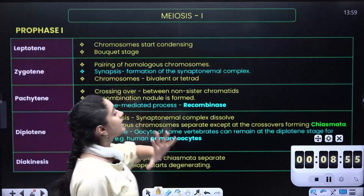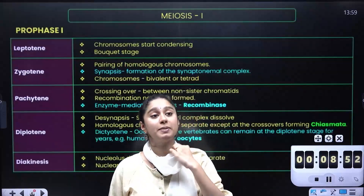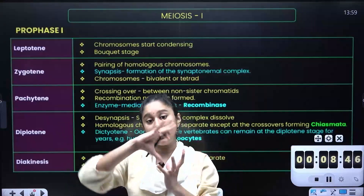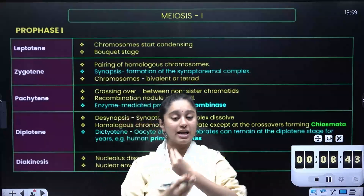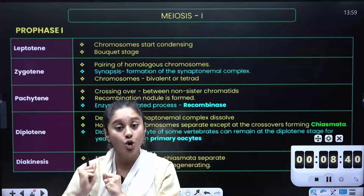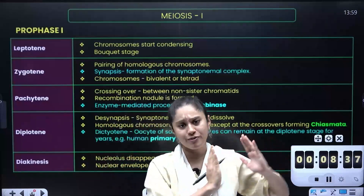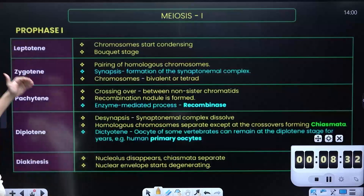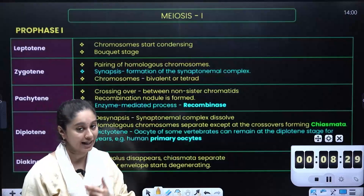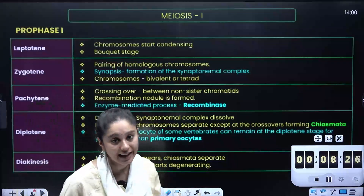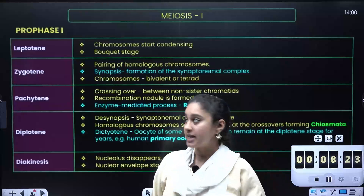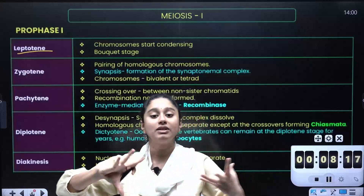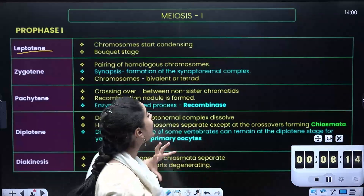Starting with prophase 1 — in prophase, the nucleolus will disappear, nuclear membranes disappear, and chromatins will form into a chromosome-like structure. That is the starting of prophase. Prophase 1 is divided into 5 stages. In prophase 1, the first sub-stage is called leptotene. In the leptotene stage, chromosomes will start to condense into a chromosome-like structure.